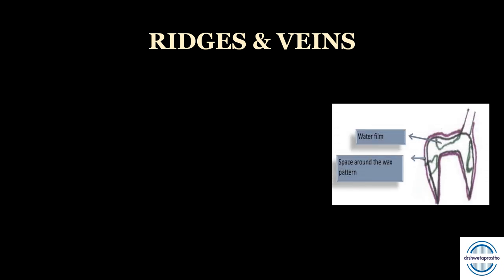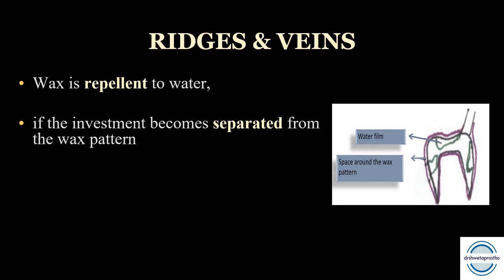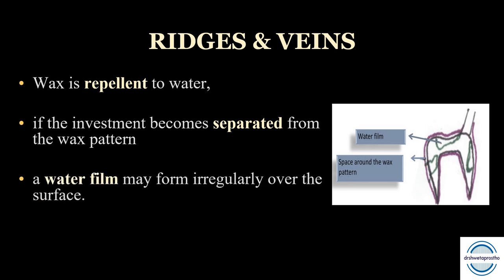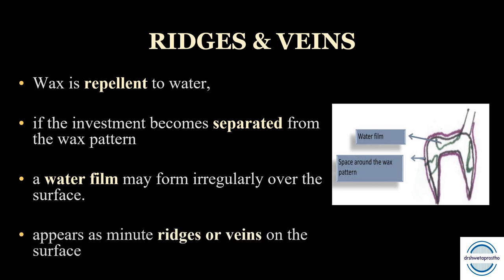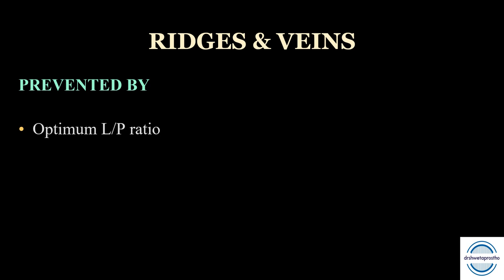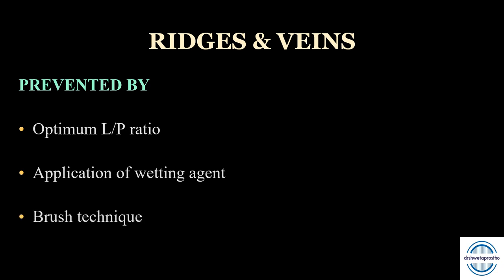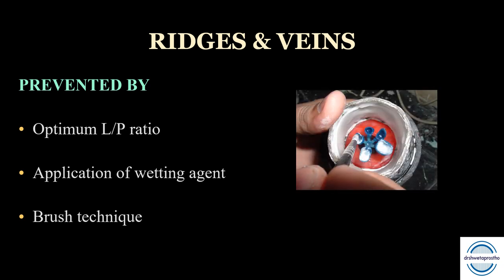Ridges and veins form because wax is hydrophobic and repels water. If the investment becomes separated from the wax pattern, a water film may form irregularly over the surface, appearing as minute ridges or veins on the casting. These are prevented by using the optimum liquid-to-powder ratio of investment material, applying a wetting agent to reduce water films, and using the brush technique to ensure increased contact between the wax pattern and investment material.